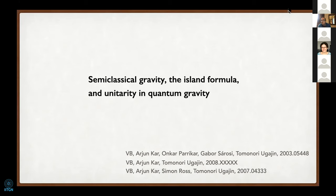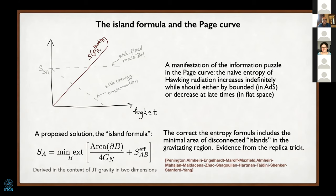Any questions so far? Feel free to interrupt me. I'm basically summarizing work done with Arjun Kar, Onkar Parikar, Gabor Sharoshi, and Tomonori Ugajin. There's another paper coming out early next week with Arjun and Tomonori, and a third paper with Arjun, Simon Ross, and Tomonori Ugajin that came out a while ago. I'm going to discuss recovering unitarity using semi-classical gravity, and then the apparently contrary finding that if you include Euclidean wormholes, the effective description of gravity is somehow in an ensemble.